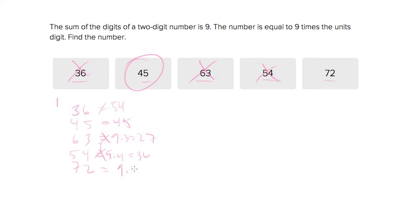Is 72 equal to nine times two? Nine times two is 18, that is not equal to 72, so that's not the answer.